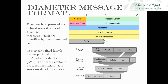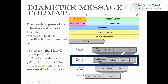Diameter messages are in byte format and consist of a header and a payload. The header contains version, common flags, and command code, while the payload contains the data to be sent. All these fields comprise a fixed length, and messages also consist of AVP pairs — attribute value pairs. Similar kinds of AVPs are present successively within the diameter messages.